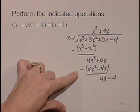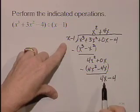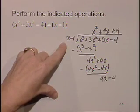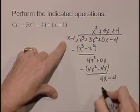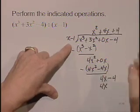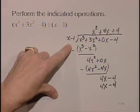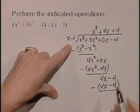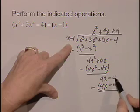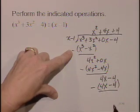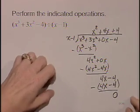And we'll bring down our last term. x goes into 4x, 4 times, and we'll multiply. 4 times x is 4x. 4 times a negative 1 is negative 4. And when we subtract, 4x minus 4x is 0. Negative 4 minus a minus 4 becomes negative 4 plus 4, which is 0.